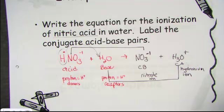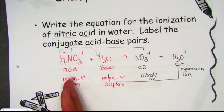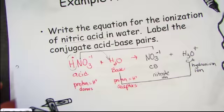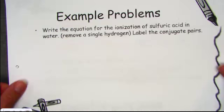With Bronsted-Lowry theory, it's all about proton transfers. The acid will donate its hydrogen ion and the base will accept it — we have proton transfers in the Bronsted-Lowry equation.